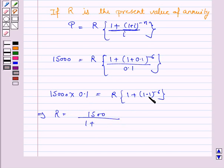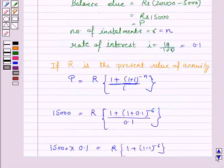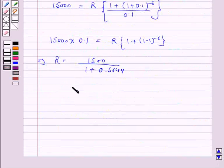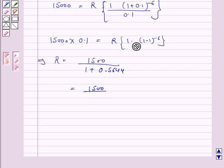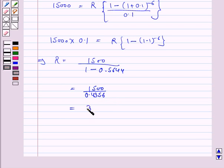Now, (1.1) to the power minus 6 is given as 0.5644. So we have 1 minus 0.5644 which is equal to 0.4356. Dividing 1,500 by 0.4356, we get the value of R as rupees 3,443.533.